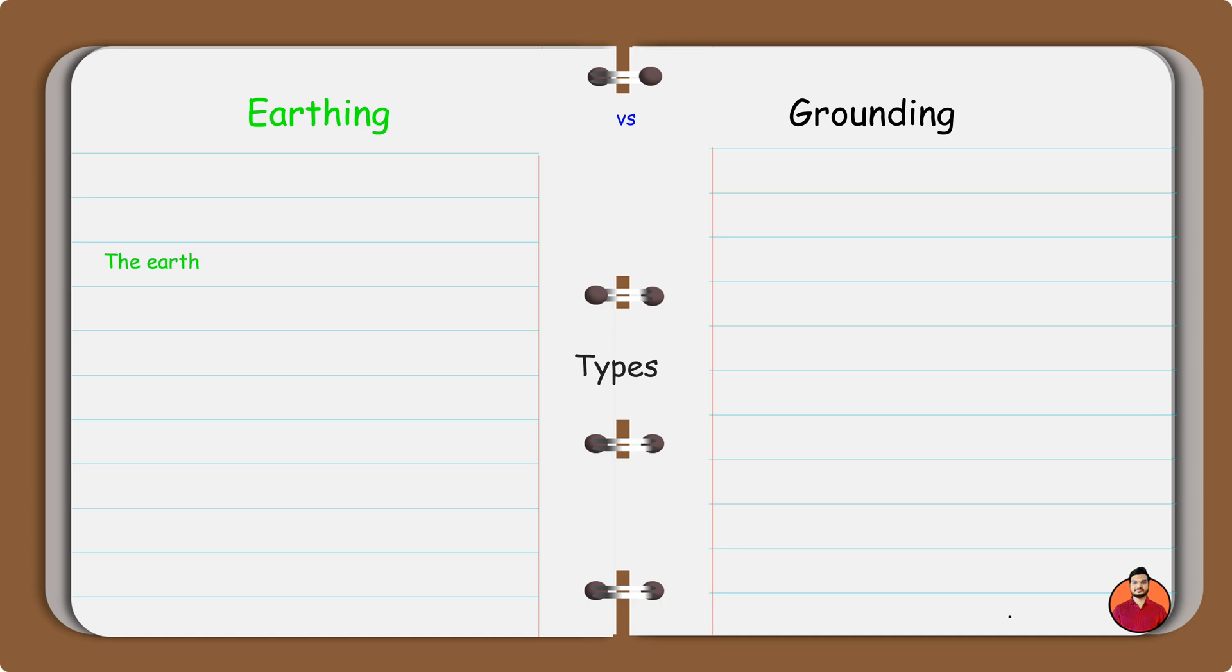The wire used in earthing is green in color. The wire used for grounding is black in color.